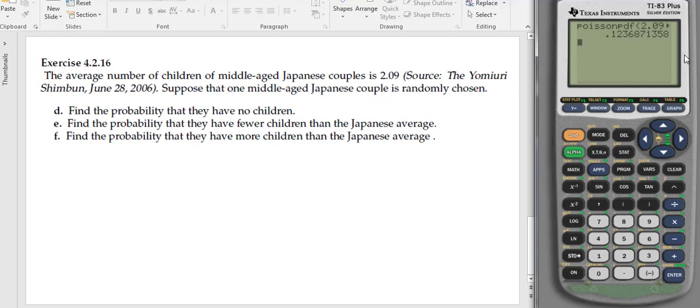If we want four decimal places, it's 1, 2, 3, 6, and we look at this 8, which means we're going to put in the number 0.1237. So 0.1237 is the probability of finding a Japanese family with no children.